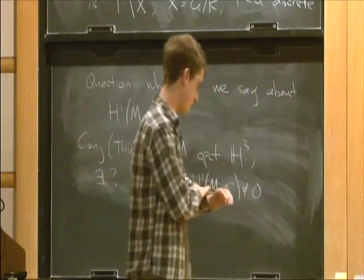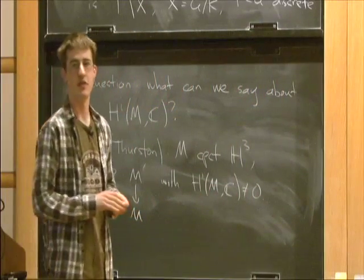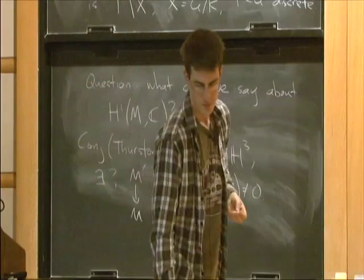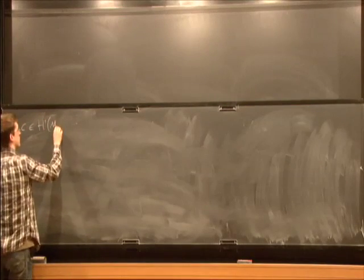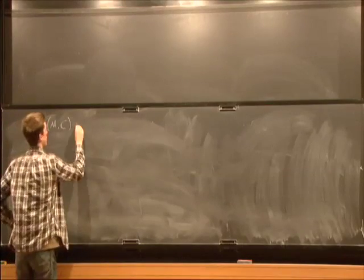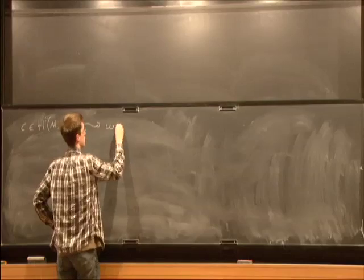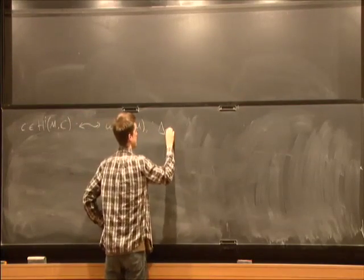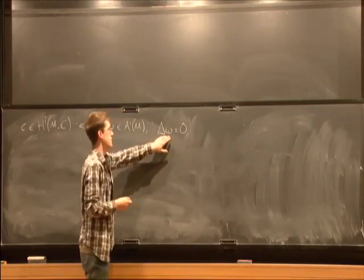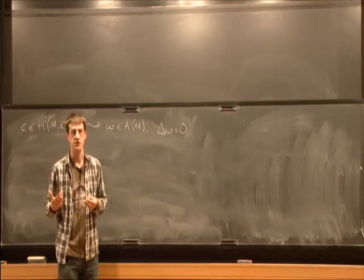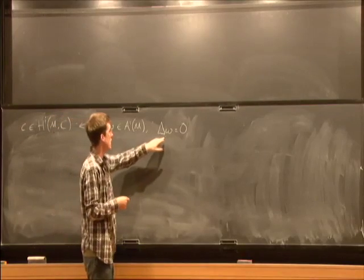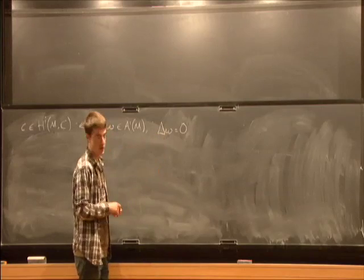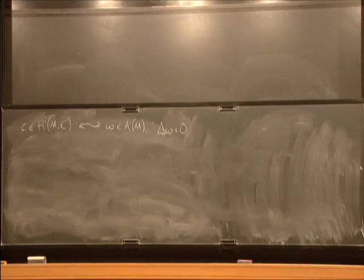The first tool that I want to talk about applying to this problem is the representation theory of the Lie group G. To motivate where the representation theory comes in, if we have a cohomology class in H^i of M for some i, by Hodge theory that corresponds to a differential i-form on M which is harmonic. There's some Laplacian that you can define on differential i-forms. It's a generalization of the usual Laplacian on functions.